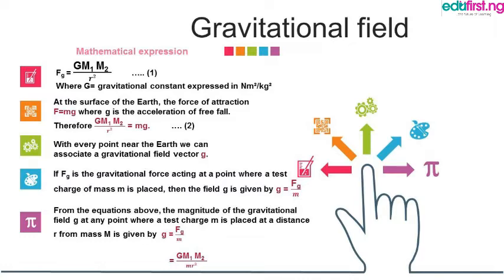Here, M1 is the mass of the first body, M2 is the mass of the second body, R is the distance between the two bodies, and G is the gravitational constant, usually expressed in Newton meters squared per kilogram squared.